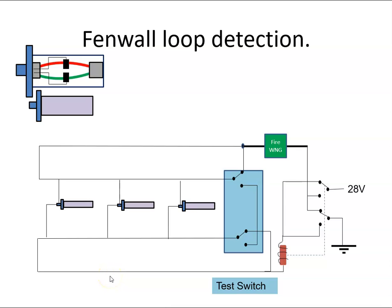In this video we're going to talk about spot detection systems. An example might be the Fenwall spot detection system and how it is wired in a loop.